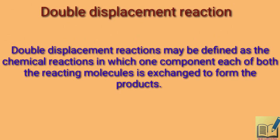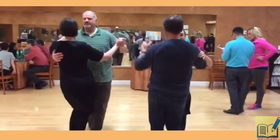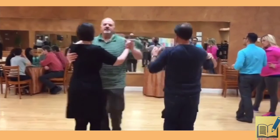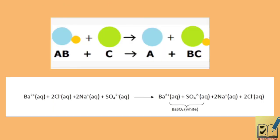In double displacement reaction, both reactant molecules exchange one component each to form the products. You can think of it like a salsa dance, in which two pairs of couples are involved and both switch their partners. So the switching of partners between different pairs is the double displacement reaction. For example, barium chloride and sodium sulfate undergo a double displacement reaction, and barium sulfate gives a white-coloured precipitate — this is an ionic reaction.